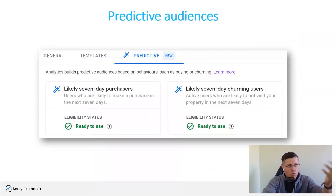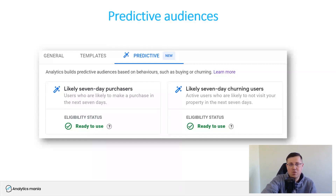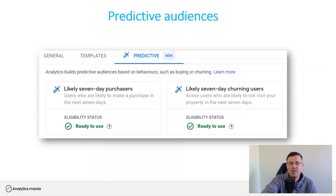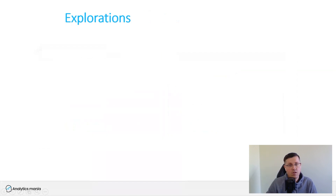Another feature is more related to the machine learning and AI part of GA4. One area where it's used is audiences — though this is not for everyone, because you need a solid volume of purchases being tracked. Machine learning algorithms will try to build an audience of people who are likely to buy within the next seven days, and you can later show ads to that particular audience.